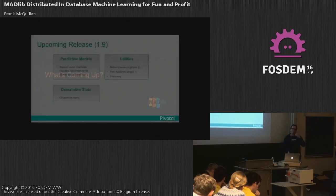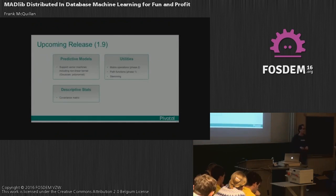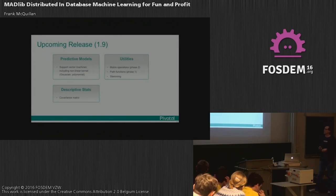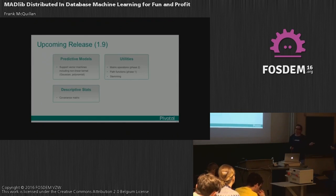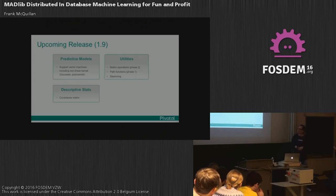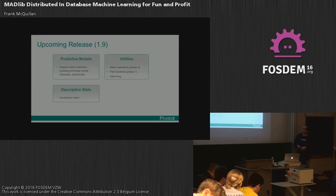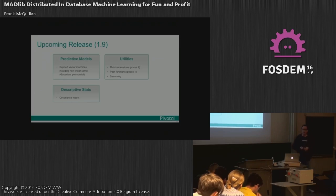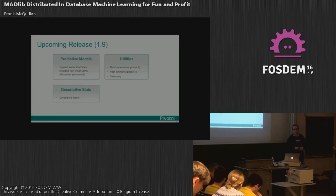To finish up — the 1.9 release is coming within the next month or so. We've completely refactored support vector machines, including support for non-linear kernels. We've also added more utilities: matrix operations, path functions, stemming, and other text analytics functionality.